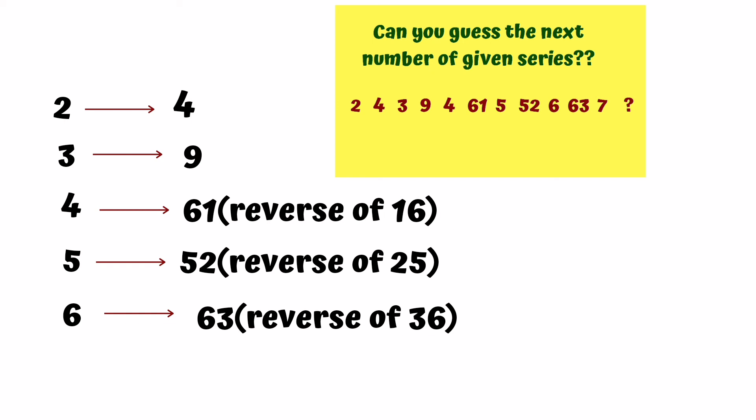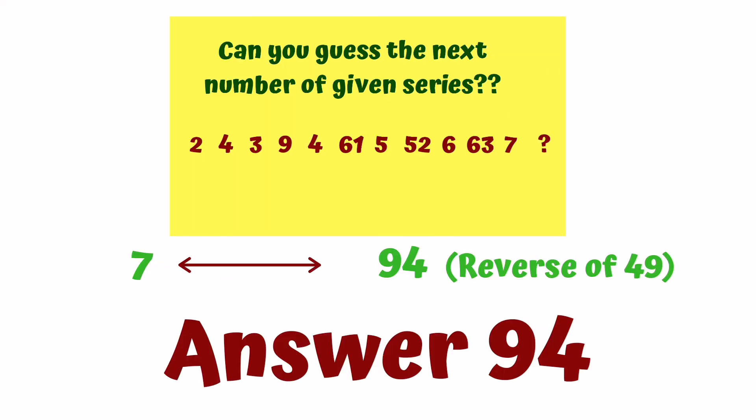This is the series pattern. Final solution: 7 squared is 49, reverse is 94. So in the question mark place, the number 94 will be filled.